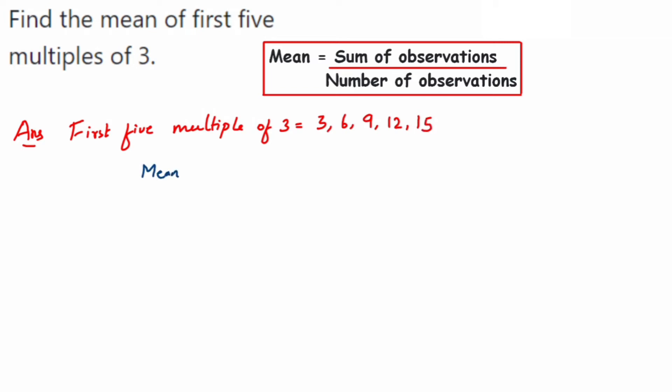Mean is the sum of all observations divided by the total number of observations. Sum of observations means you add all the observations and divide by the number of observations, which are 5 here.